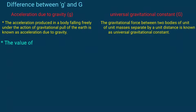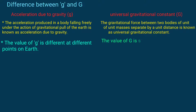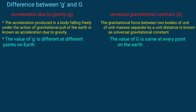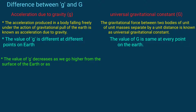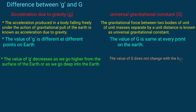The value of g is different at different points of the earth, whereas the value of G is the same at every point on the earth. The value of g, that is acceleration due to gravity, decreases as we go higher from the surface of the earth or as we go deep into the earth. The value of G does not change with the height and depth from the surface of the earth.